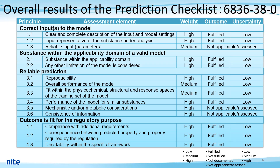These are overall assessment elements for the prediction checklist and our results. In the prediction checklist, outcome, certainty level, and weight of the assessment elements were considered for the evaluation. In the next several slides, I'd like to explain the details of each assessment element and how we concluded each outcome in the assessment for this substance.